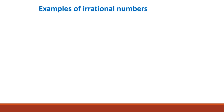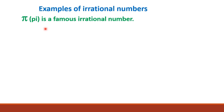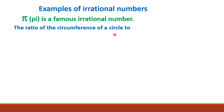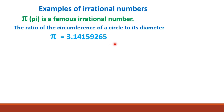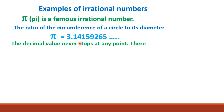Examples of irrational numbers. First example: Pi. Pi is a famous irrational number — the ratio of the circumference of a circle to its diameter. Pi is equal to 3.14159265 and so on. The decimal value never stops at any point; there are infinitely many digits after the decimal point.